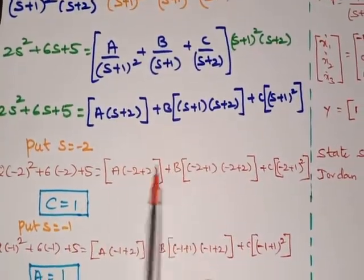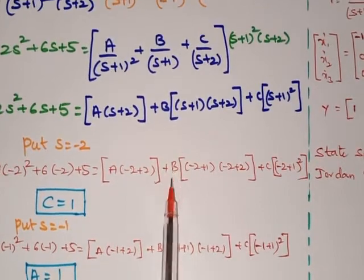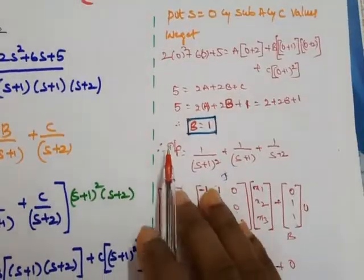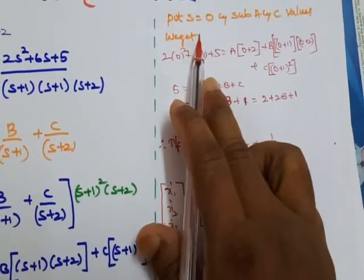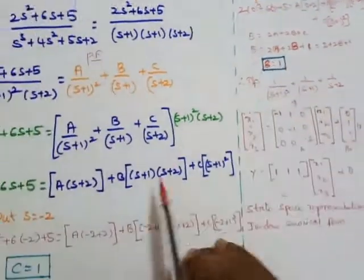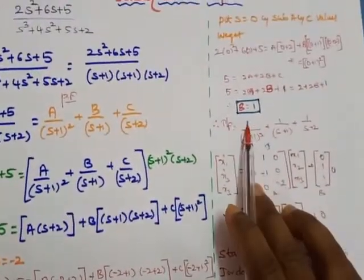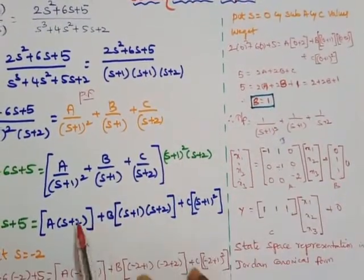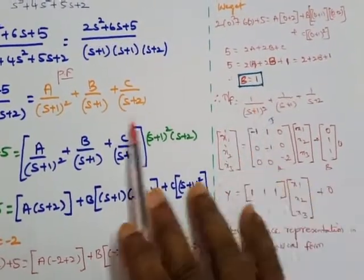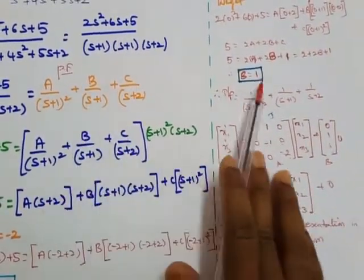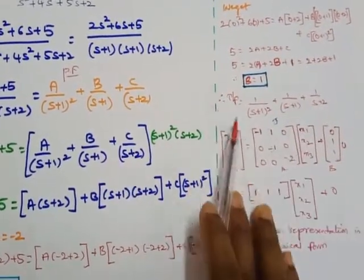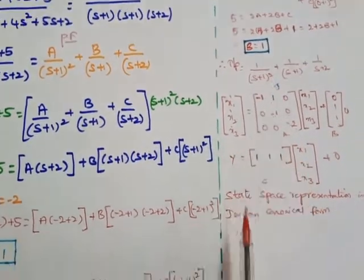Now solve for B by substituting s = 0 along with the known values A = 1 and C = 1. After solving, B = 1. Substituting all three values into the partial fraction gives the transfer function as: 1/(s+1)² + 1/(s+1) + 1/(s+2). This is the required transfer function for which we now represent the state space.